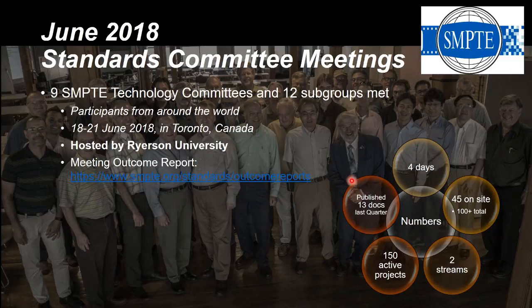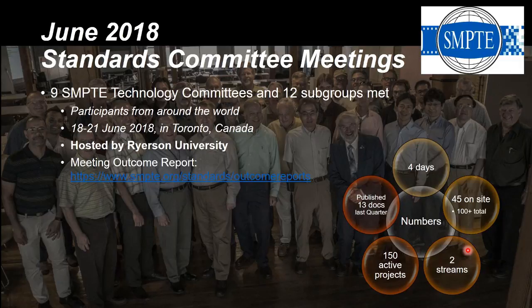The events took place over four days. There were 45 people on site and, including those who dialed in, over a hundred people in total. Ryerson gave us a big main room and a second breakout room for smaller parallel meetings. Each month new projects start and old projects get closed. We currently have about 150 active projects, and in the last quarter we published around 13 documents — we're running at an average of about one document per week.